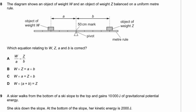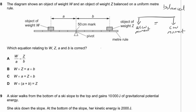Question 8. An object of weight W and an object of weight Z are balanced on a uniform metre rule. Since it's balanced, the anti-clockwise moment equals the clockwise moment. Moment equals force times distance, so W times A equals Z times B. That gives us option C.